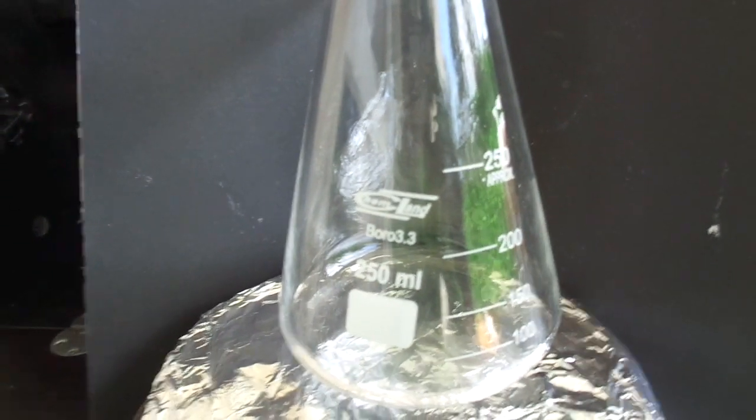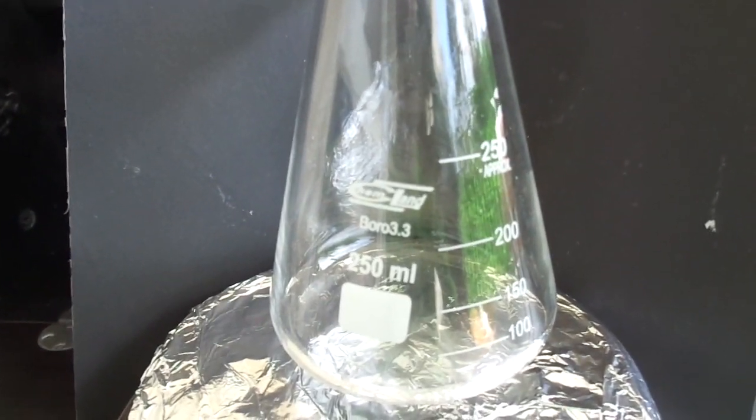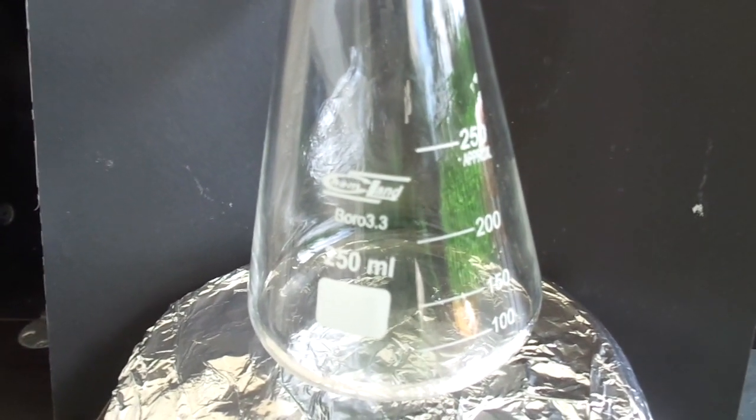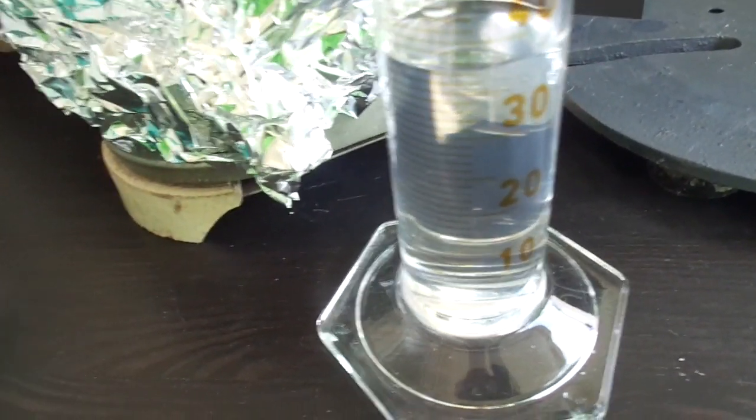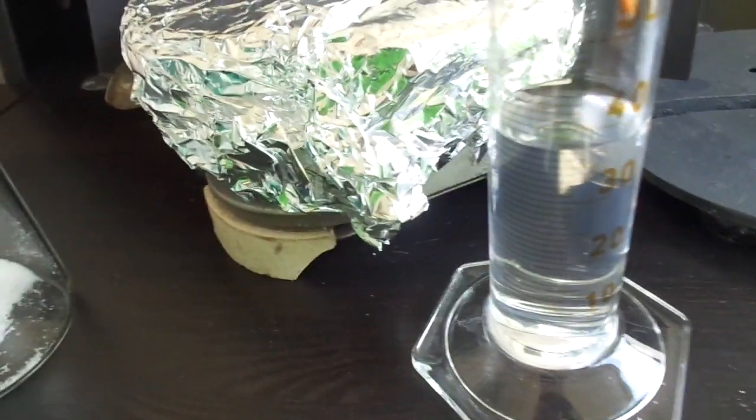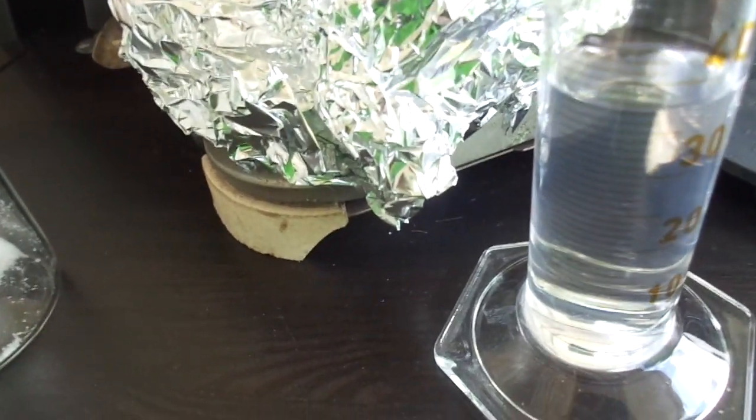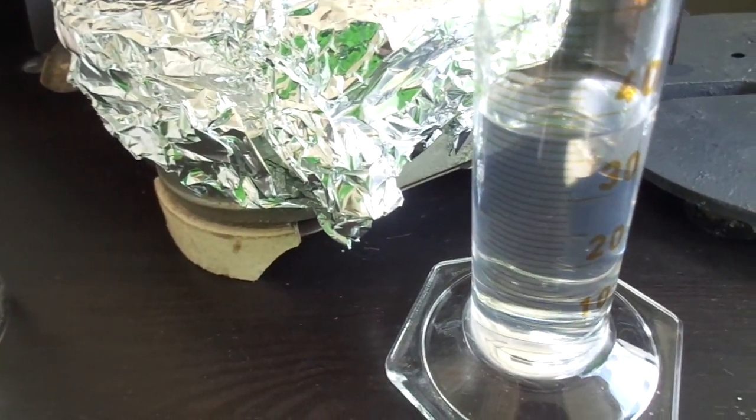Hello, in this video I'm going to make some triethyl citrate which is supposedly an ester with a nice smell. I have about 37 ml of ethanol and 28 g of citric acid. Ethanol is in excess because it's also going to be a solvent.